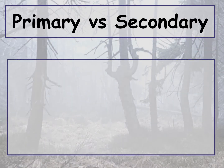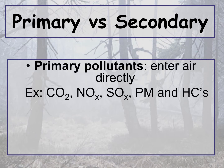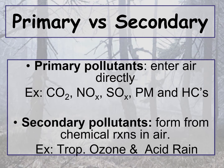There are two types of air pollutants: primary and secondary air pollutants. Primary air pollutants are ones that enter the air directly — coming out of the smokestack or tailpipe and entering the atmosphere directly. Examples include carbon dioxide, nitrous oxides, sulfur oxides, particulate matter, and hydrocarbons. Secondary air pollutants are released into the atmosphere and then undergo a chemical reaction to become a different type. For example, acid rain is a secondary pollutant: sulfur dioxide is released, mixes with water in the atmosphere, and turns into sulfuric acid rain.